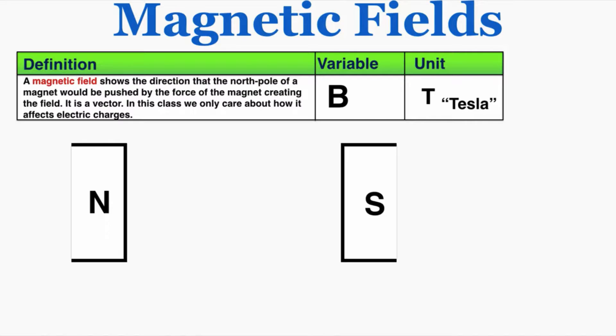The variable for the magnetic field is capital B, don't ask me why, and the unit is T for Tesla.